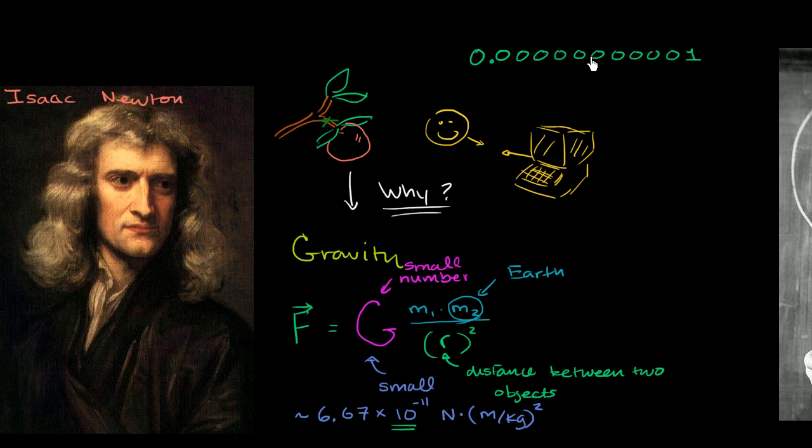So this number right here is 6.67 times this thing over here, a super small number. That's why when you multiply it by not so large numbers, if you don't use Earth, if you use you and a computer, you're going to end up with still a super duper small force, something so small you won't notice, and it's going to be overpowered by other forces so these things don't fly into each other.